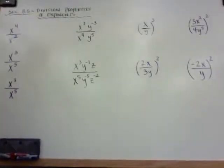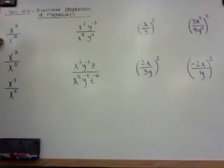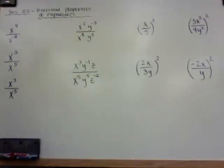Hi guys, this is section 8.5, which is the division properties of exponents. If you remember the previous chapters or sections, it was multiplication properties. So now we're dealing with division if we have x on the top and the bottom. If you remember with the multiplication, we added the exponents. Now that we're dividing, we're going to subtract the exponents. But I'll show you the long way first so you can understand why, and then I'll show you the shortcut.